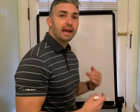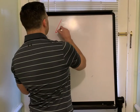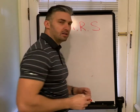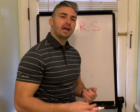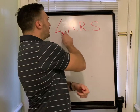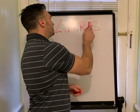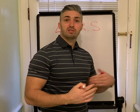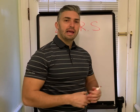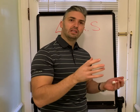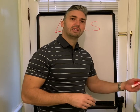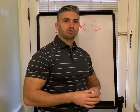With lens rotation, we're talking about an acronym — it's really simple. It's L-A-R-S, LARS. What it stands for is Left Add Right Subtract. When you're viewing the lens under the slit lamp, if it's turning to the left you're going to add, and if it's turning to the right you're going to subtract from the prescribed axis.